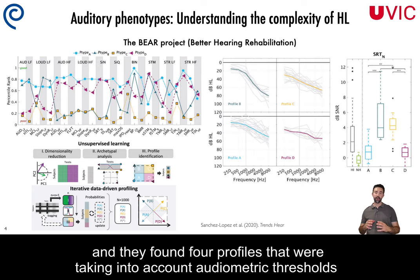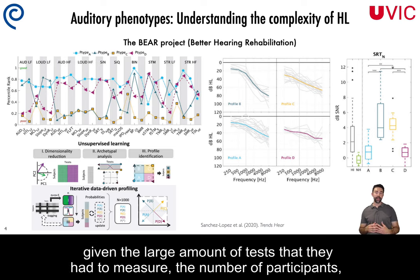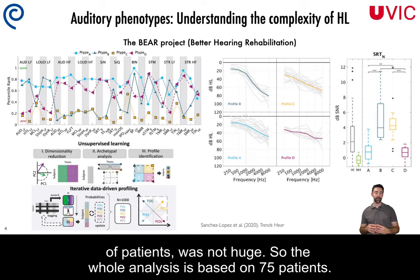They found four profiles that took into account audiometric thresholds but also suprathreshold processing. Probably the limitation of this work was that given the large amount of tests they had to measure, the number of participants was not huge — so the whole analysis is based on 75 patients.